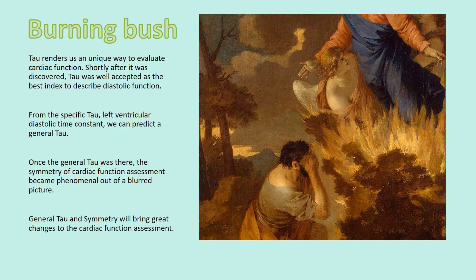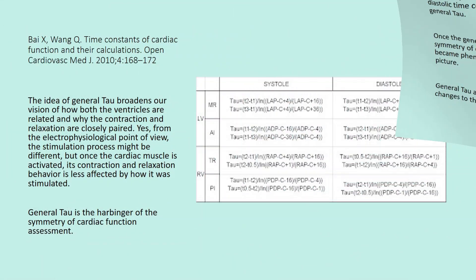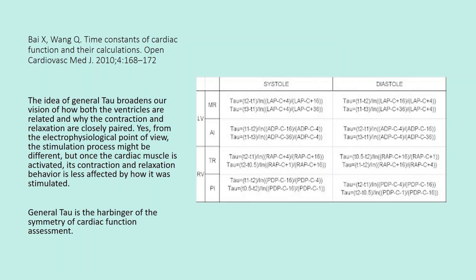From the specific tau — the left ventricular diastolic time constant — we can predict a general tau. Once the general tau was established, the symmetry of cardiac function assessment became phenomenal out of a blurred picture. General tau and symmetry will bring great changes to cardiac function assessment.